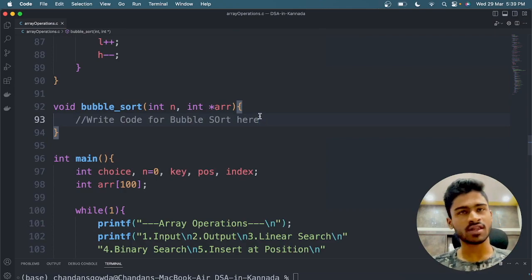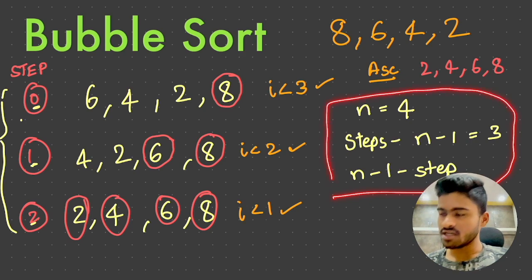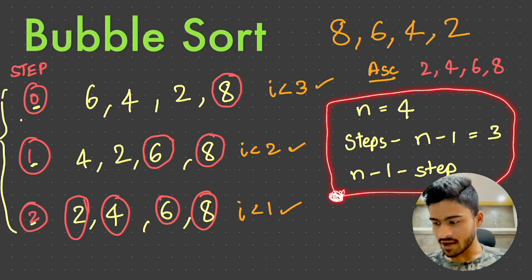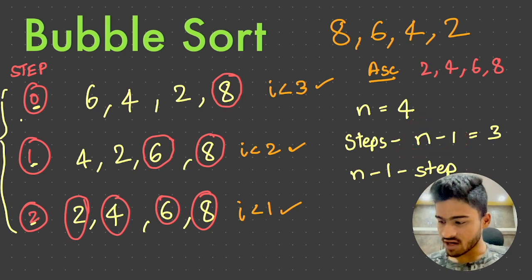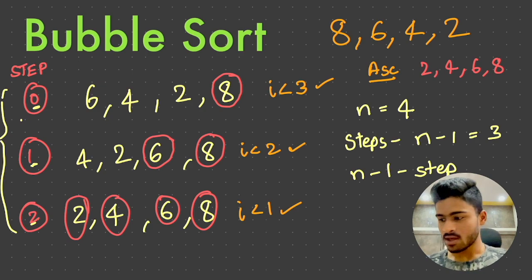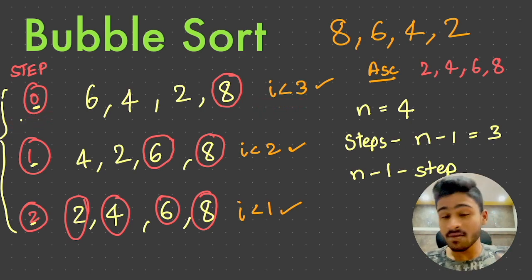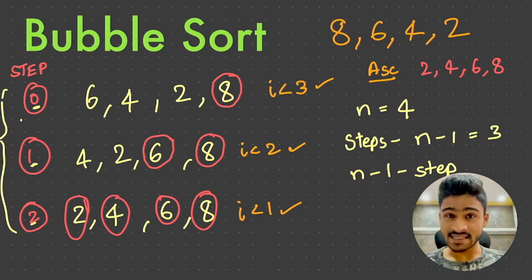The next thing we are going to do is algorithm design. So you will observe — this is very important. Steps should go from 0 to n-1. That is the step. So outer loop. Steps equal 0.